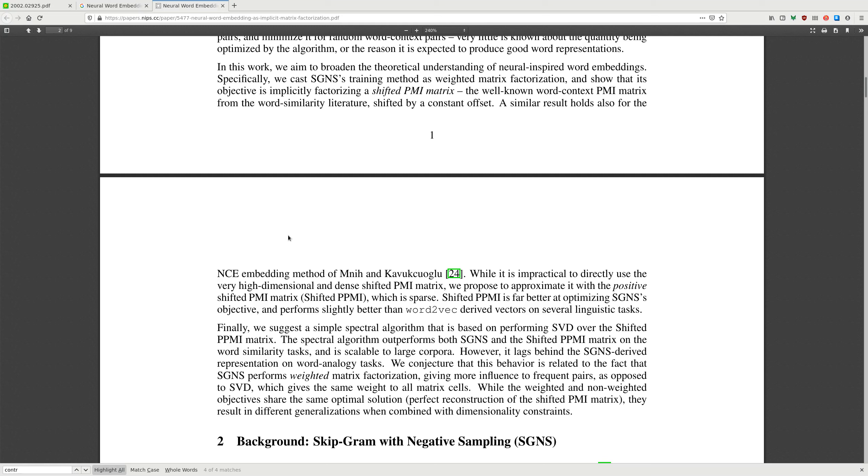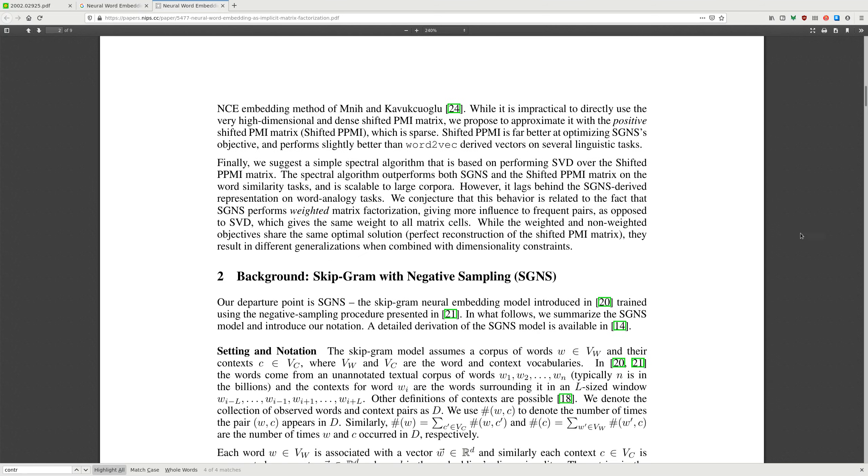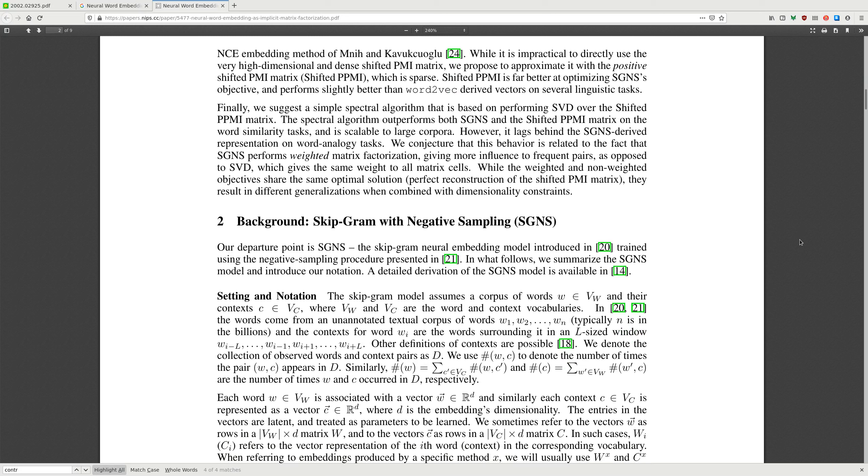The spectral algorithm performs well on word similarity tasks and is scalable to large corpora. However, it lags behind SGNS-derived representations on word analogy tasks. We conjecture that this behavior is related to the fact that SGNS performs weighted matrix factorization, giving more influence to frequent pairs as opposed to SVD, which gives the same weight to all matrix cells. While the weighted and non-weighted objectives share the same optimal solution, perfect reconstruction of the shifted PMI matrix, they result in different generalizations when combined with dimensionality constraints.